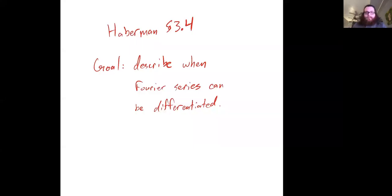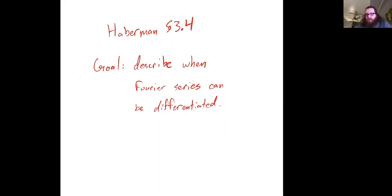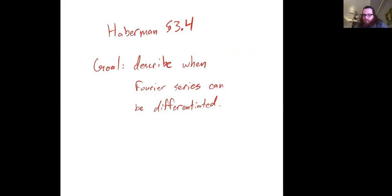In this video, we're going to work through Haberman's section 3.4. The goal of the section is to describe when Fourier series can be differentiated.